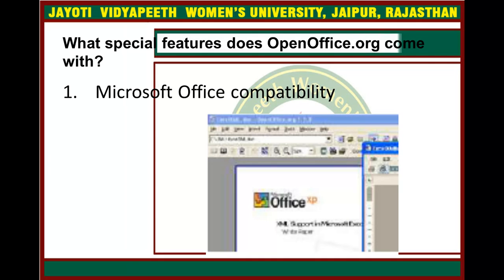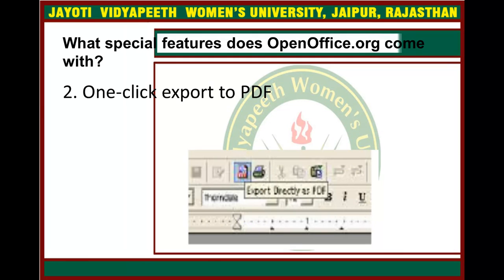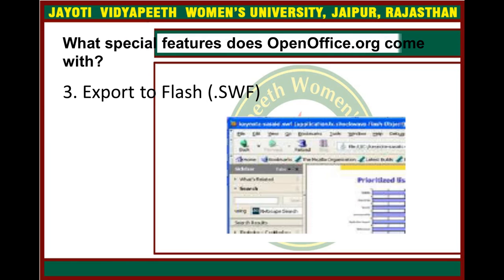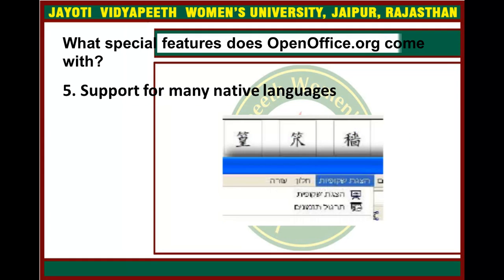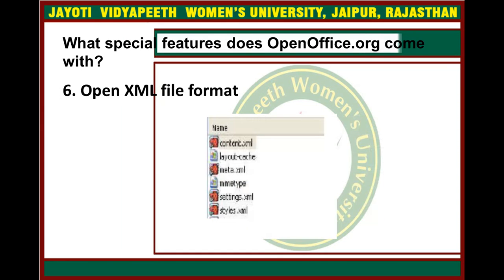What special features does OpenOffice.org come with? First is Microsoft Office compatibility — it should be compatible, because sometimes you have an older version of Microsoft Word and your file is of a higher version, and when you save the document it asks for compatibility. The same applies for Linux as well. Other features include one-click export to PDF, export to Flash SWF, accessibility, support for many interactive languages, and Open XML file format.